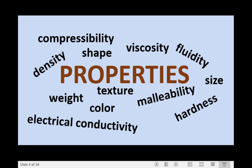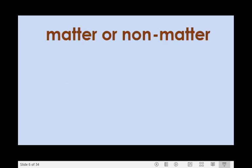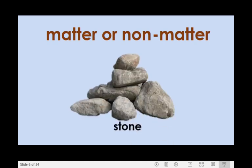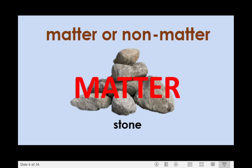Before we proceed, let's check whether you can distinguish properties of matter from those of non-matter. Try to identify which is matter, which is not. I have here five samples. The first sample is stone. Is stone an example of matter or non-matter? That's correct! Stone is an example of matter. Can you tell me its state of matter? Very good! Stone is solid.